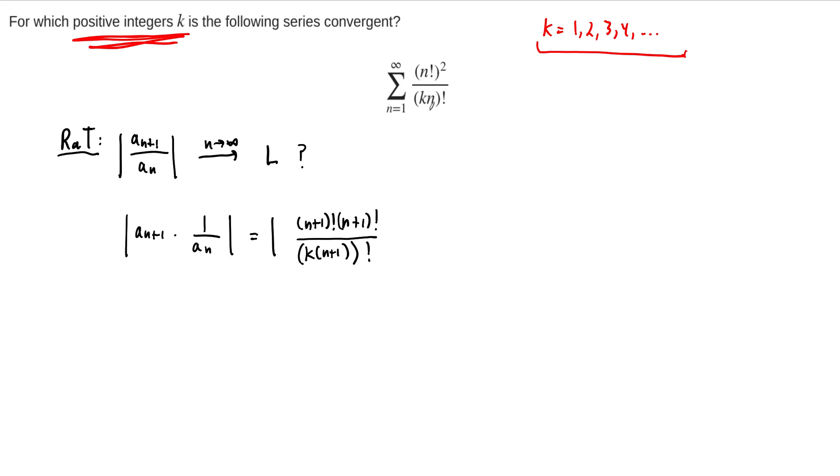That is our a sub n plus 1 term, so the next term in our series. This needs to be multiplied by the reciprocal of what we actually have, which is kn factorial over n factorial times n factorial. I'll write that one out in two parts as well. And now what we need to do is analyze this, try to cancel as much as we can so that we can take the limit and get a meaningful answer back. Remember, k is a constant, and so k is probably going to be part of our limit, our answer to our limit. So we want to keep it around.